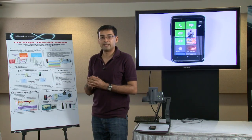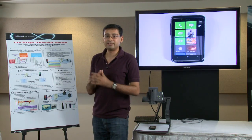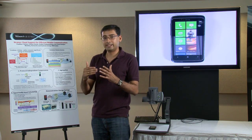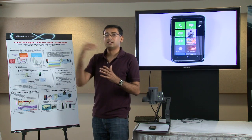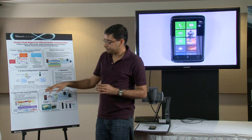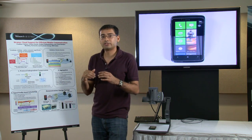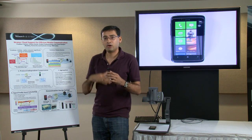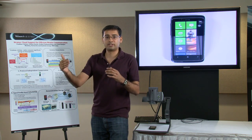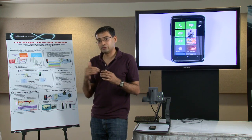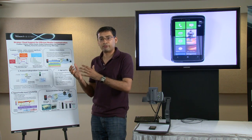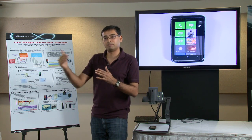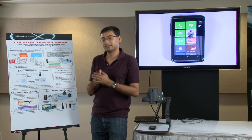The third problem is signal strength. We employ an optimal scheduling strategy that looks at signal strength. The key idea is to look at signal profiles for your frequent routes — how the signal varies along, say, your home-to-office route. The next time a user goes along the same route, we use the profile to predict when the signal is going to be good and schedule communication in those periods to get energy savings.